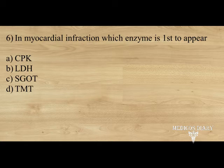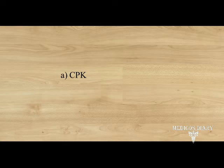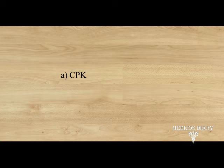In myocardial infarction, which enzyme appears first? Options: A. CPK, B. LDH, C. SGOT, D. TMT. Answer: option A, CPK. Creatine kinase (CK or CPK) is the first enzyme raised in plasma after MI. Its concentration rises after 4 to 6 hours, reaches peak after 12 hours, and falls to normal within 48 to 72 hours. The most sensitive markers of myocardial cell damage are cardiac troponin T and I, which are released within 4 to 6 hours and remain elevated for up to 2 weeks.